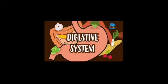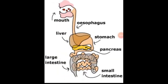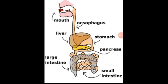Assalamu alaikum, welcome to our science class. Today students, we are going to study about the digestive system, a system which is involved in digestion of our food. In our mouth, teeth are present which help to grind the food, the tongue is also present which helps to roll the food, and salivary glands are also present in our mouth which help to soften the food.